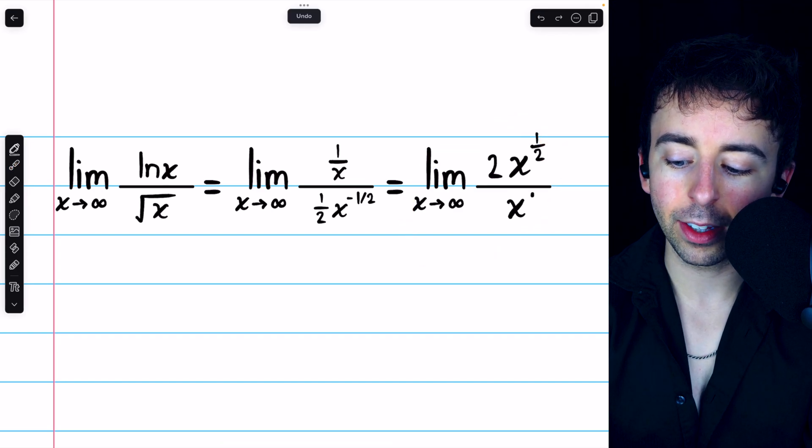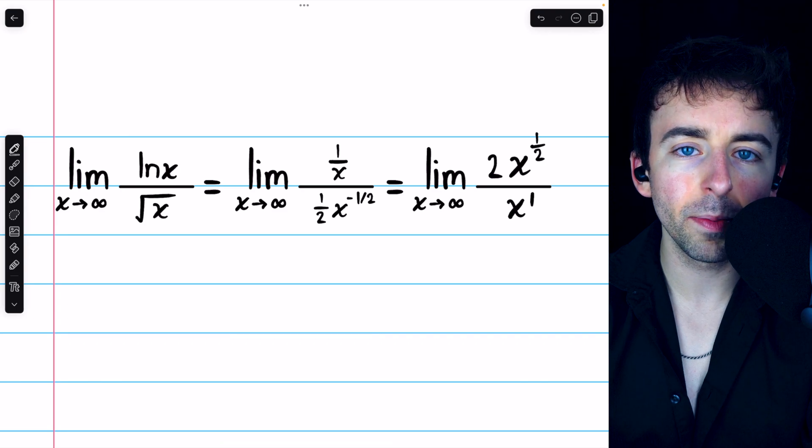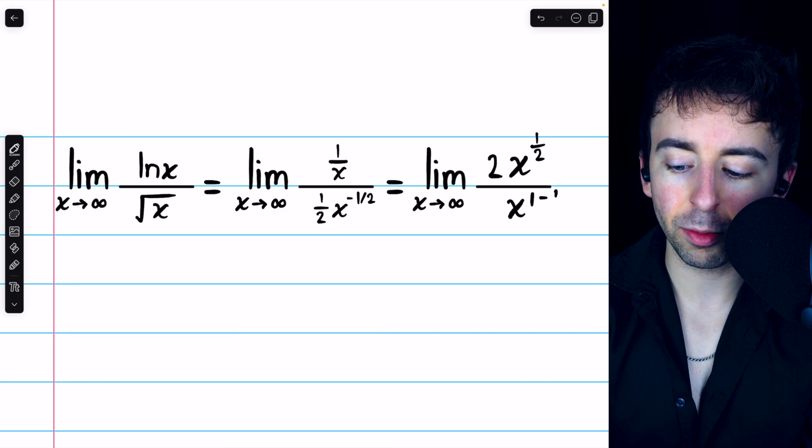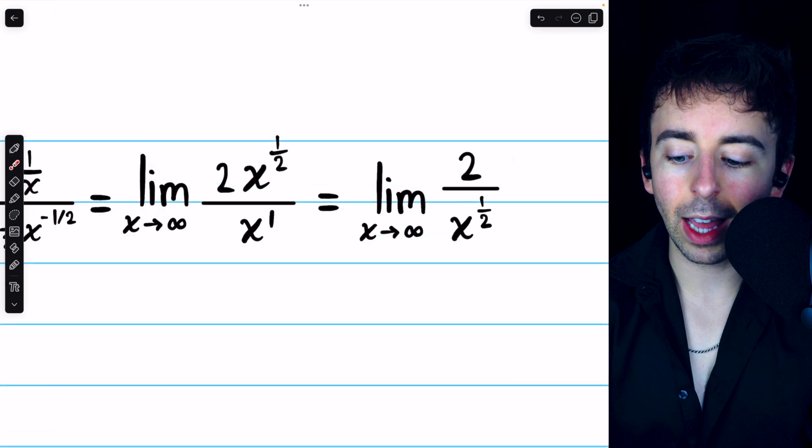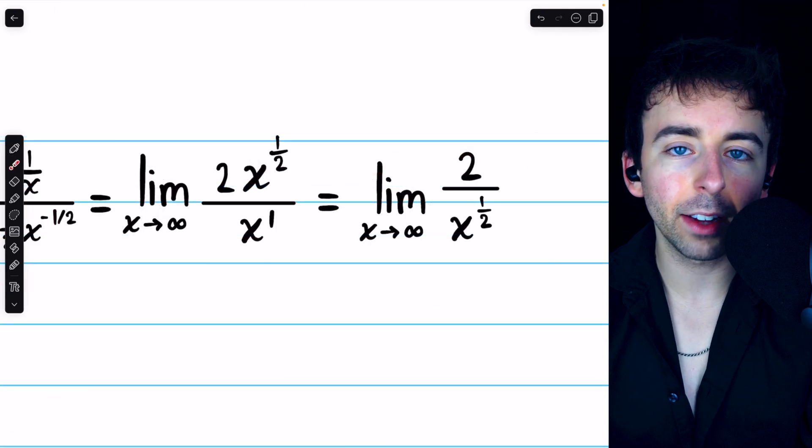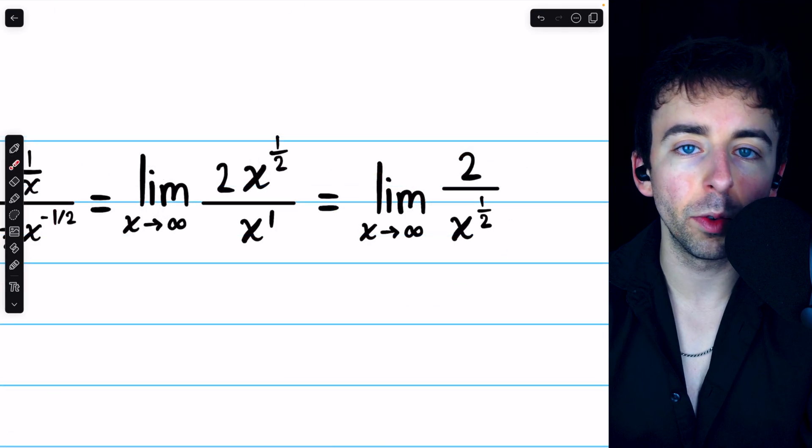Now, we can simplify this a little bit with the exponents. This is x to the 1 half, and in the denominator, we have x to the 1. So, let's subtract those exponents down to the denominator. Thus, we're left with the limit of 2 over x to the 1 half as x goes to infinity.